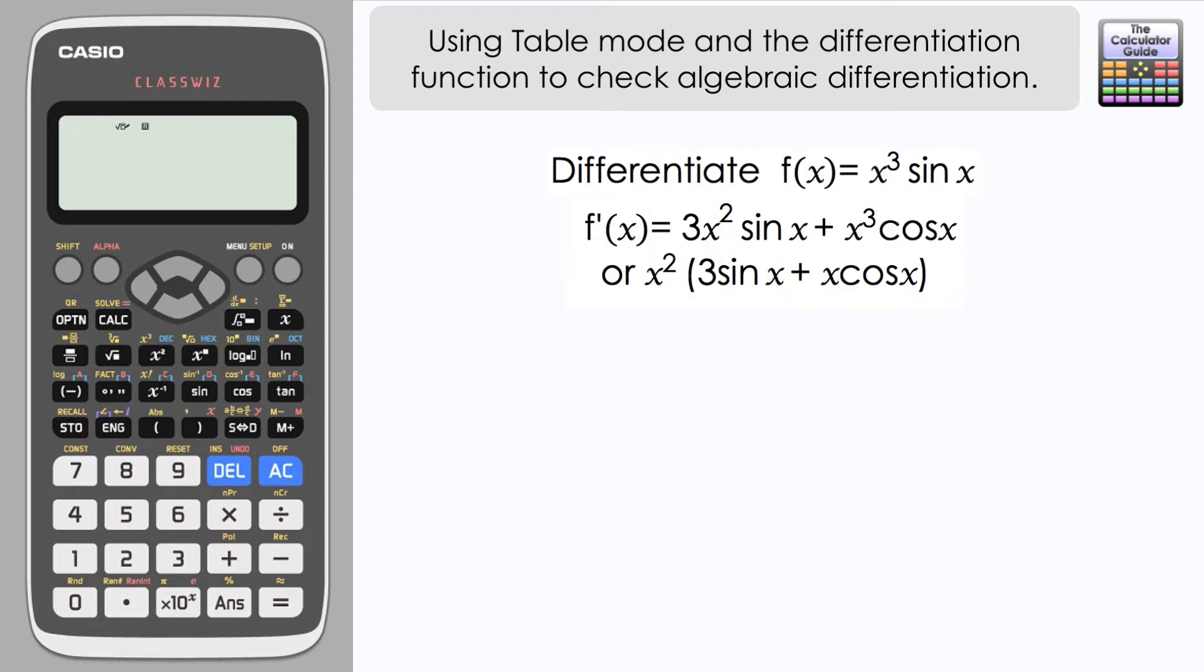using the differentiator and table mode. Okay, so here's my differentiated answer: 3x² sin x + x³ cos x. What I've done is use the product rule there for differentiation. And indeed, I could factorize x² from both of these two terms to have x² and then a set of brackets with 3 sin x + x cos x within the brackets.